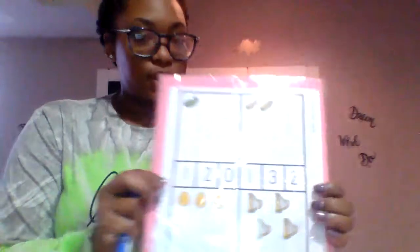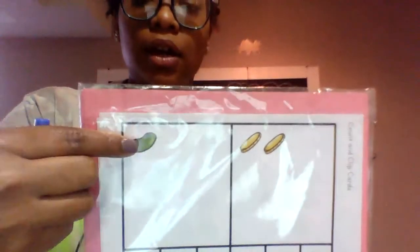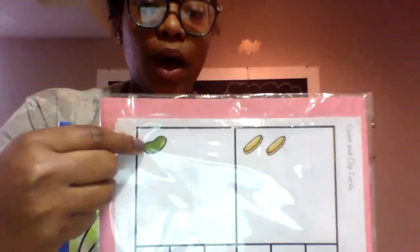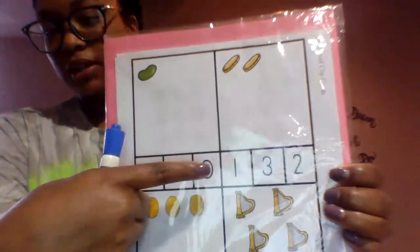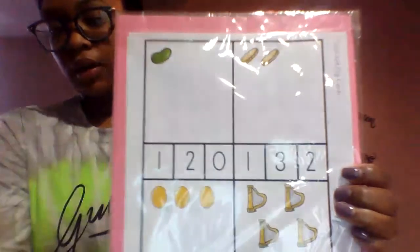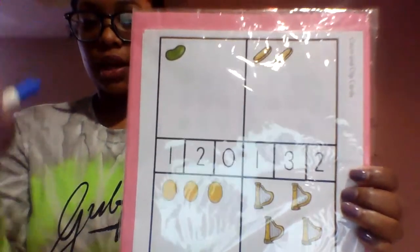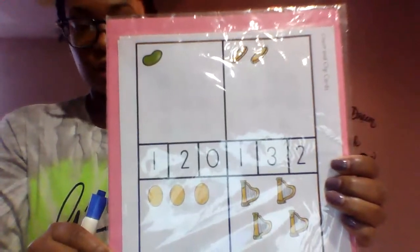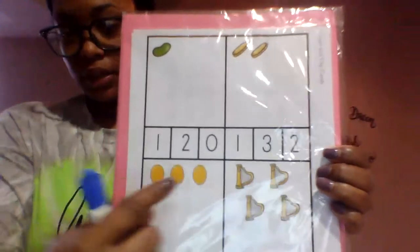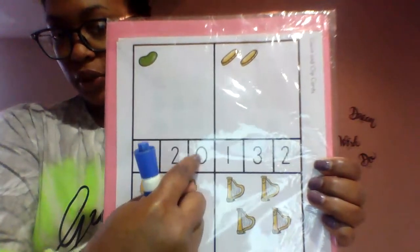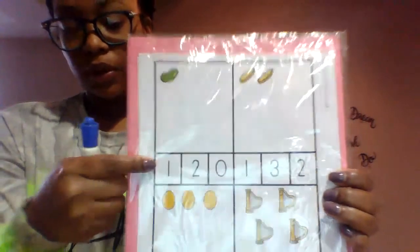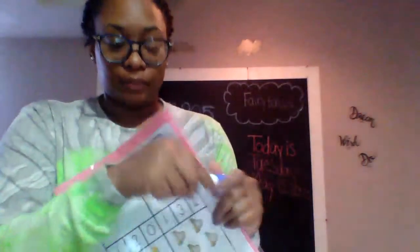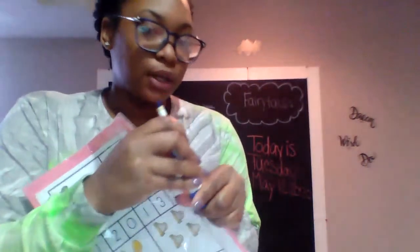Okay, so right here there is one bean. Let's see which one of these is the number one. A number one is a straight line down, and then you stop. Is this the number one? No, that's a circle like a ball. Here's the number one — a straight line down. I'm going to circle my number one.